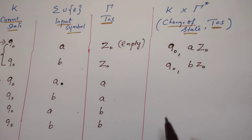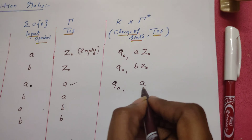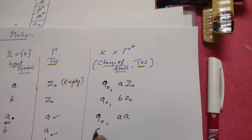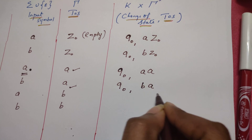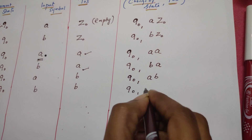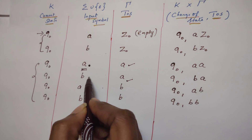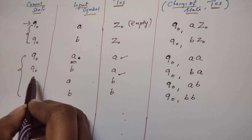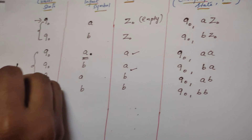For all four configurations, the PDA continues to stay in Q0. The top of the stack may be A or B, and whatever symbol is read, that symbol is pushed onto the stack above the current top. For example: (Q0, B, A) pushes B above A; (Q0, A, B) pushes A above B; (Q0, B, B) pushes B above B; and so on. These four rules may be executed in a loop for every character of the first half.